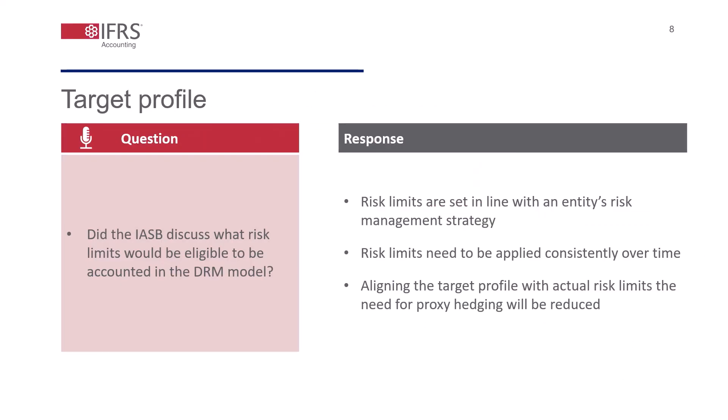You mentioned that the target profile is essentially the risk limit an entity is willing to accept given its current risk exposure. But did the IASB discuss what risk limits would be eligible to be included in the DRM model? No — the IASB didn't specify the risk limit eligibility because we wanted to be consistent with how an entity decides to manage its interest rate risk exposures. Given the variety in risk management strategies in practice, the focus is on how to truthfully represent the metrics used for actual risk management in the DRM model, rather than setting what risk limits are eligible. An entity is expected to decide how it monitors and manages interest rate risk exposures, document the approach in the risk management strategy, and apply that consistently over time.